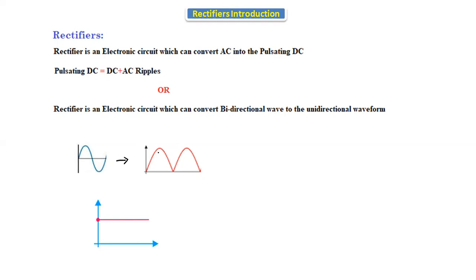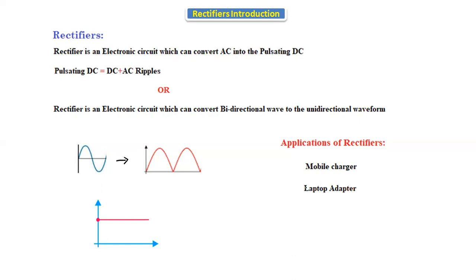How we will get pure DC, we will discuss later. Now let's see the applications of rectifiers. We use rectifiers in mobile chargers because the battery stores energy in the form of DC only, but the home supply is AC. Similarly, laptop adapters also use rectifiers since laptop batteries store DC.